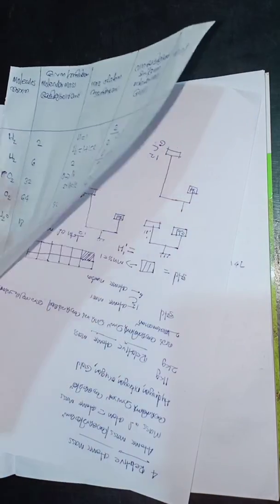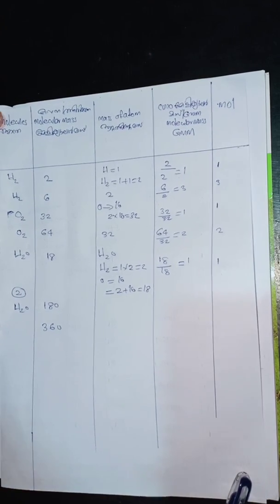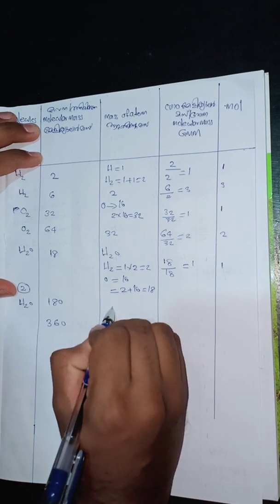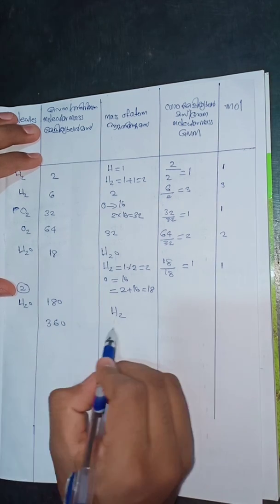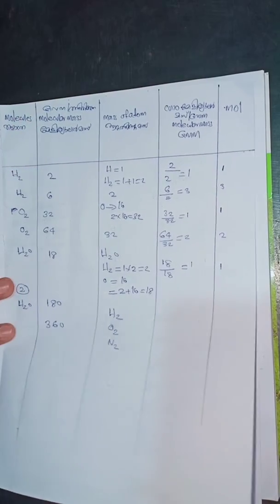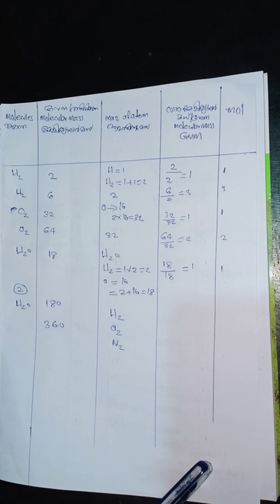Atomic mass and GM. We are doing this for a table: Hydrogen is H2, Oxygen is O2, Nitrogen is N2. We will work through these.